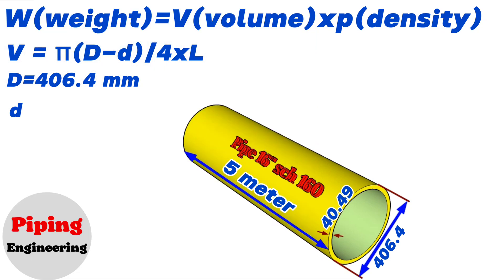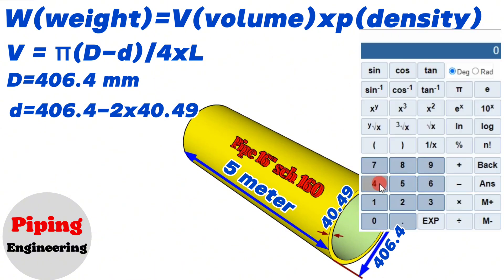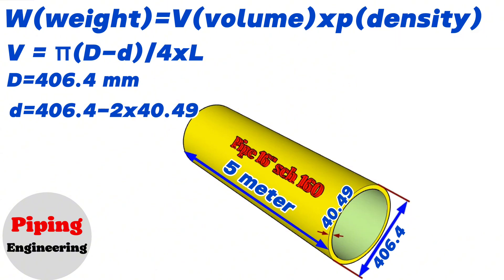The inside diameter equals the outside diameter 406.4 minus 2 times the wall thickness 40.49. Using the calculator, we find that 406.4 minus 2 times 40.49 equals approximately 325. So we calculated and found that the inside diameter of the 16 inch schedule 160 pipe in our example is 325 millimeters.